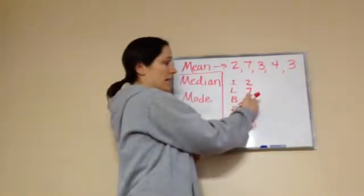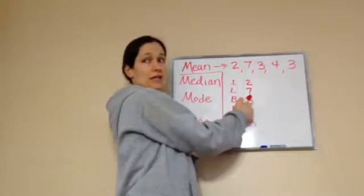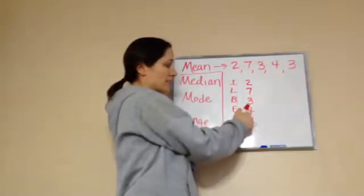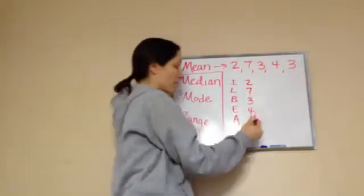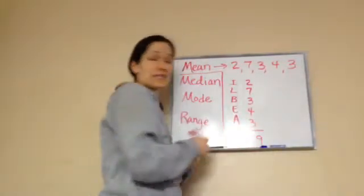Two plus seven is nine. Three more. Ten, eleven, twelve. Thirteen, fourteen, fifteen, sixteen. Seventeen, eighteen, nineteen. So we have a total of 19 pancakes.